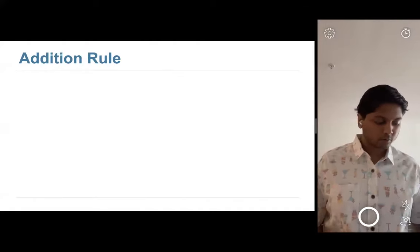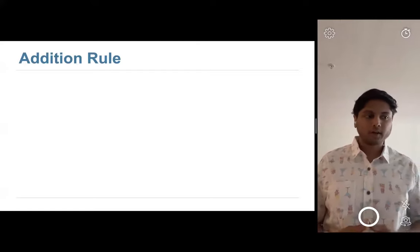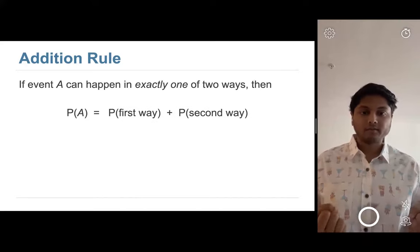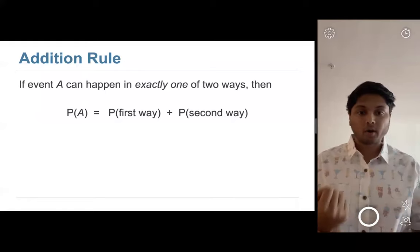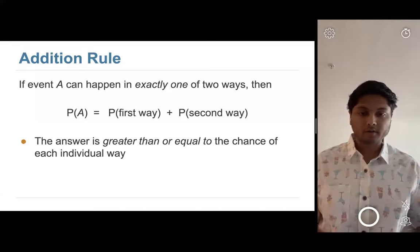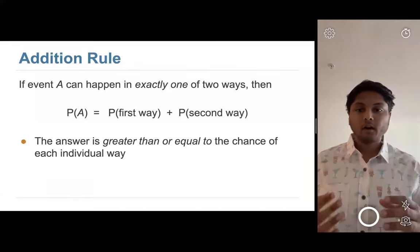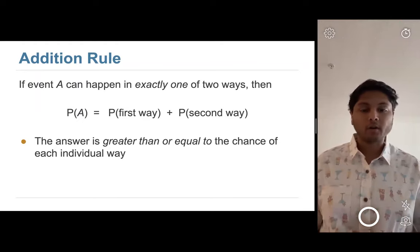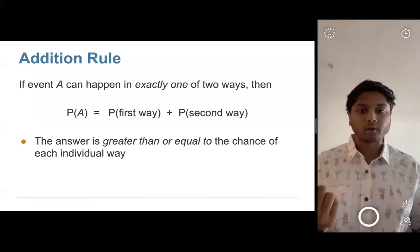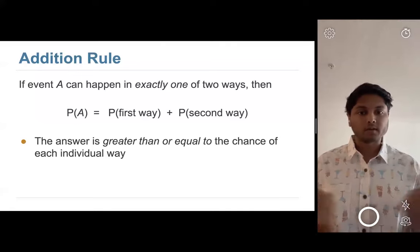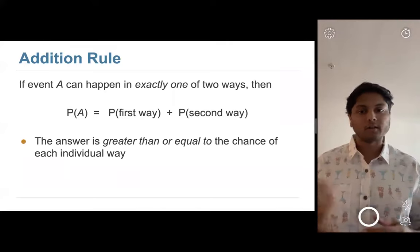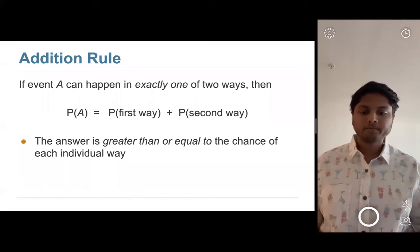Then we talked about the addition rule, which is useful when there are a few distinct outcomes that result in an event happening. If you have two distinct ways an event can happen, you find the probability of each one individually and add them together. The example was: probability of getting a queen and a king in any order from drawing two out of three cards. There are two distinct ways — queen then king, or king then queen — each with probability 1/6, so 1/6 plus 1/6.